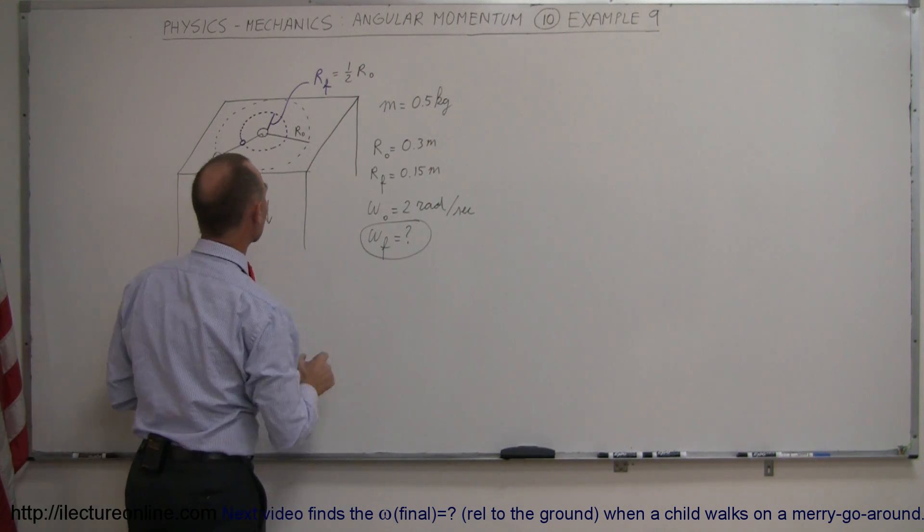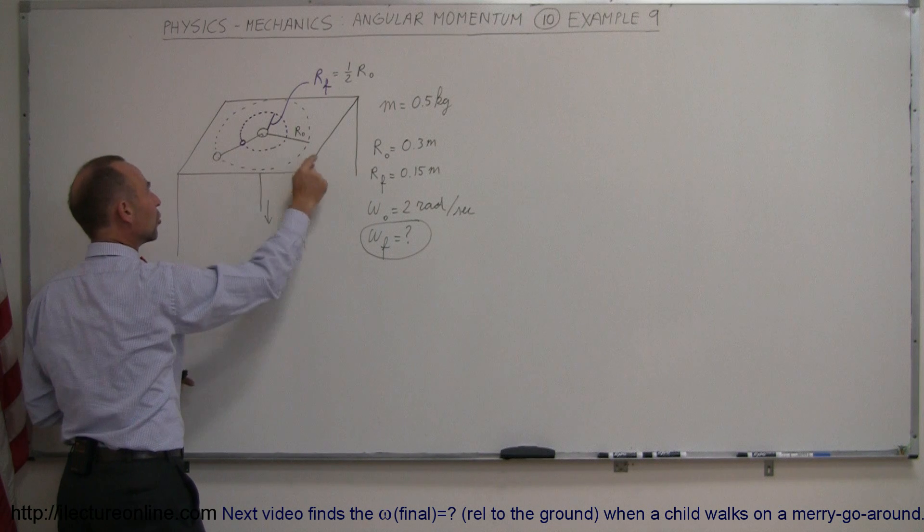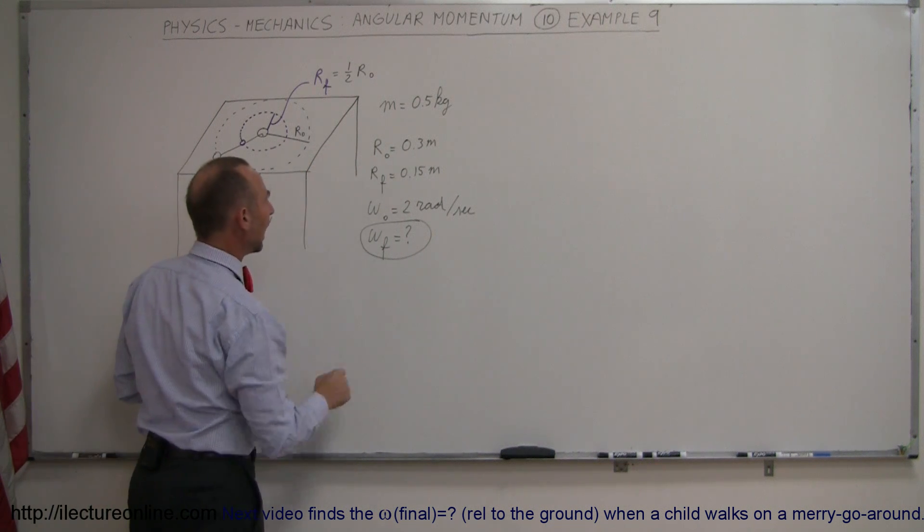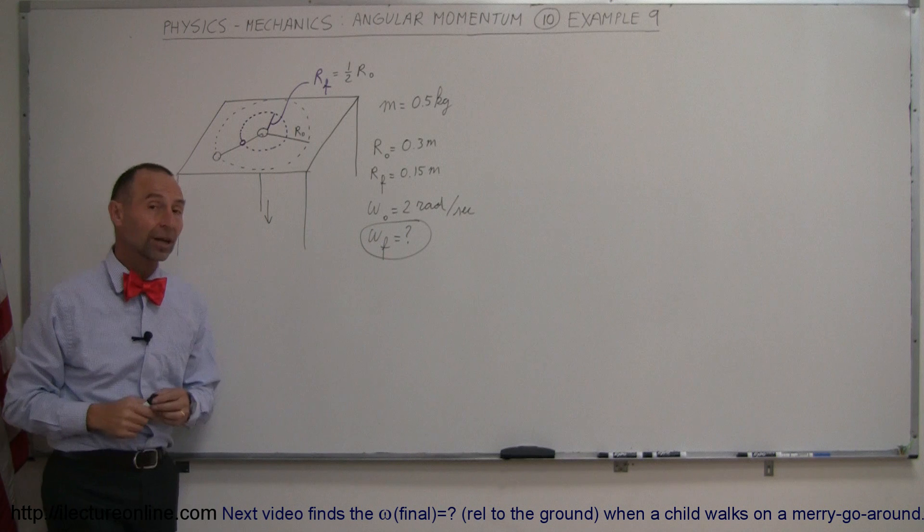Let's say the puck has a mass of half a kilogram. The radius of its circular motion is 0.3 meters and the initial angular velocity is 2 radians per second.